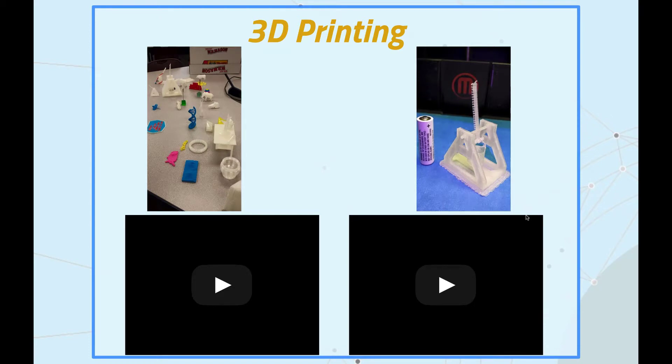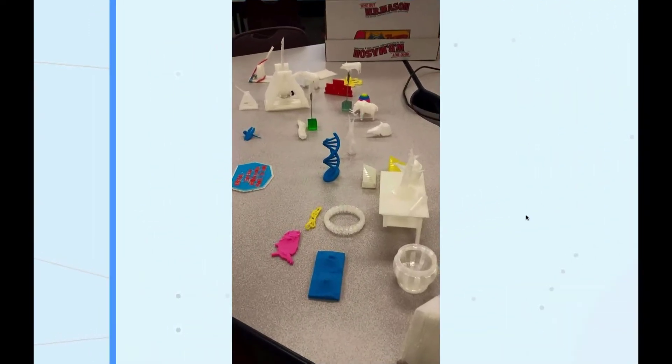Think about the flipped Bloom's model that we talked about earlier in the course. This is an image of some of the things that I created with a 3D printer. Most were designed by me. Others were from websites like Thingiverse, where you can download free models and have them printed out on any printer.